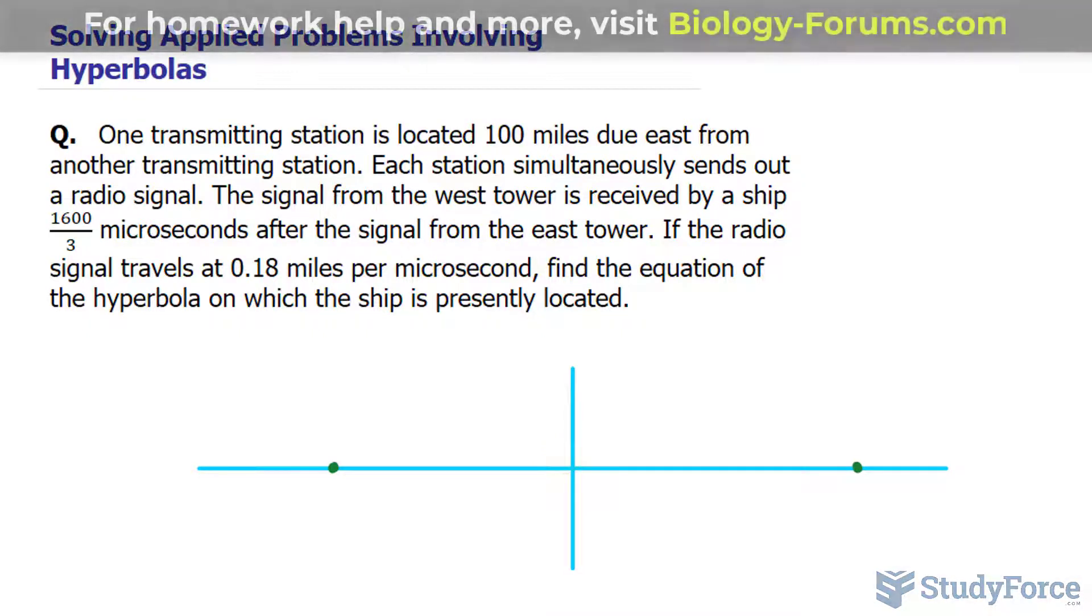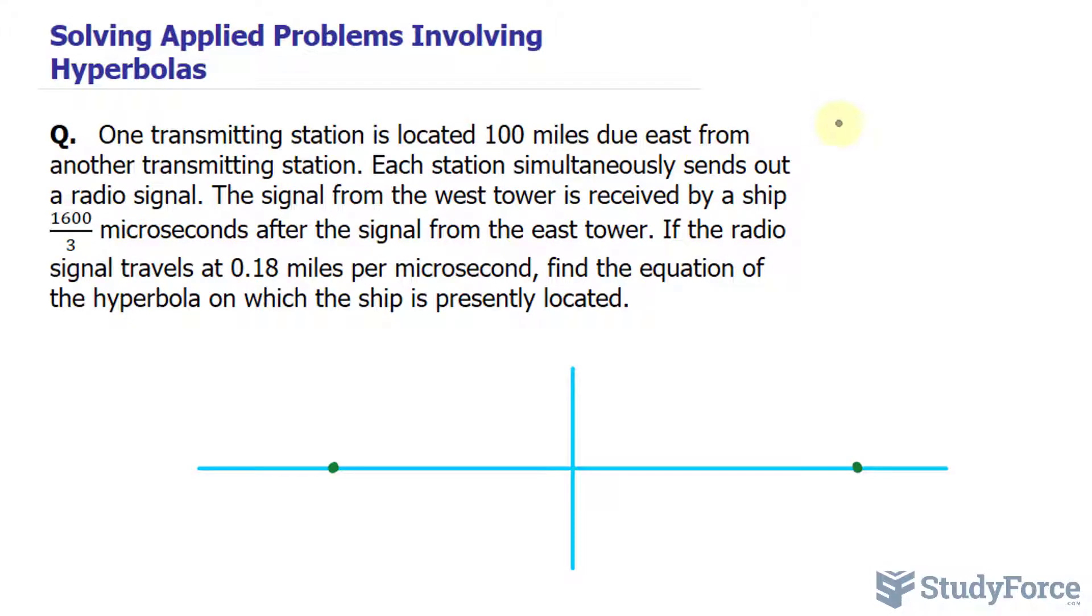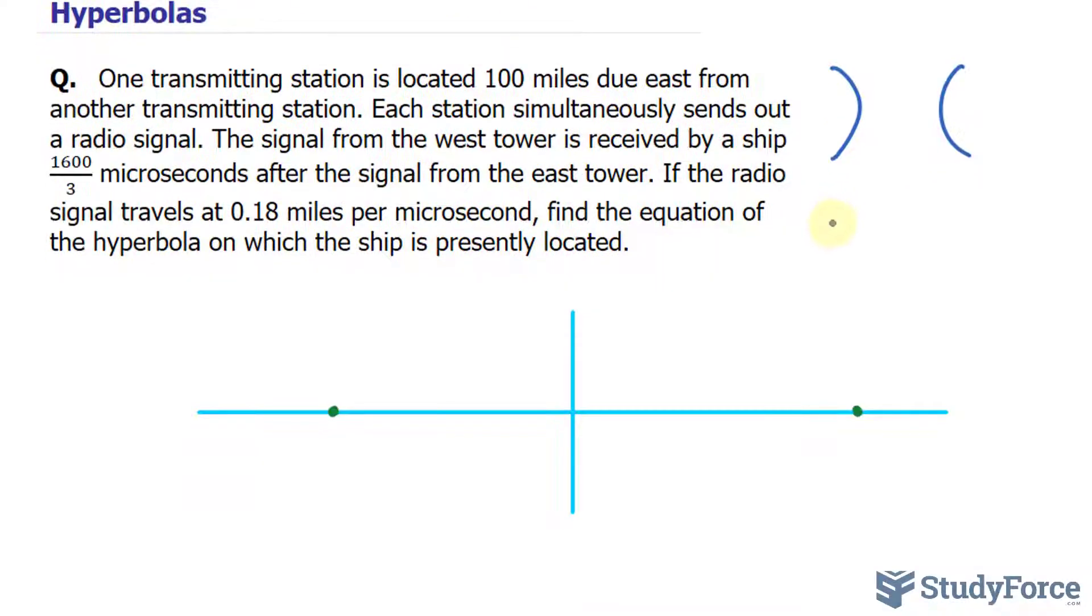The next thing that I thought was that because the two towers are located east and west, that means that our transverse axis is likely horizontal. So we have a hyperbola opening up left and right.